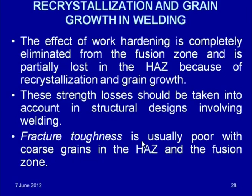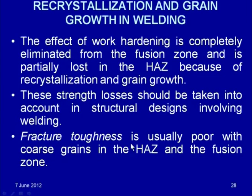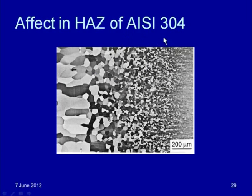The fracture toughness of the heat affected zone, which is close to the fusion boundary and has coarse grains, is poor compared to the base material. For example, for austenitic steel AISI 304, the base metal has a very fine grain structure, and as we come closer to the fusion boundary, coarsening of grains takes place. Beyond the fusion boundary, a columnar grain structure with significant grain growth can be observed.